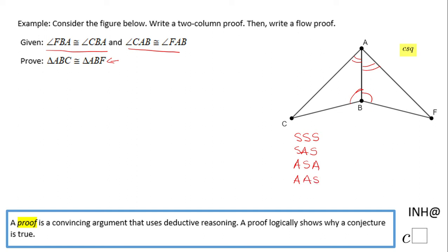Two congruent corresponding angles, which tells me it's one of these two ways. The one that will work is angle-side-angle because the third corresponding congruent part is the common side AB. So now...